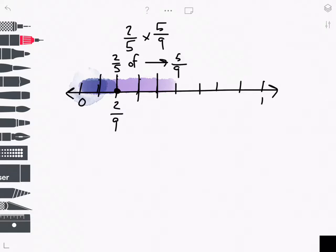So, 2/9. Let me do my computation here. 2 times 5 is 10, 5 times 9 is 45. I can simplify by dividing by 5: 10 divided by 5 is 2, 45 divided by 5 is 9. That gives us 2/9.